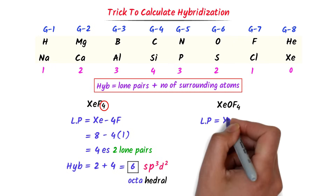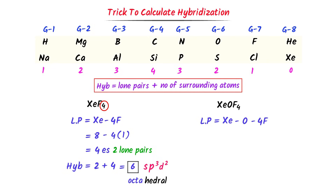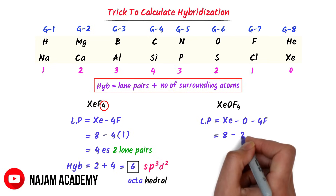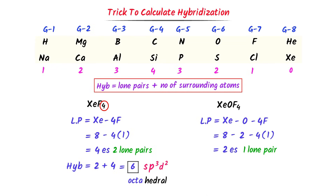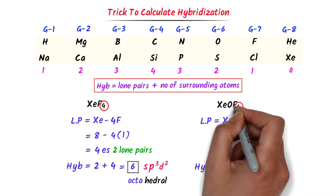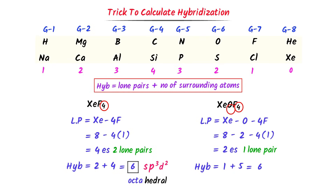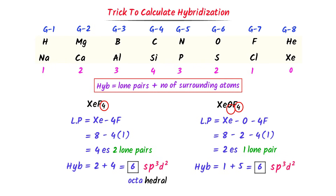In case of XeOF₄, I write xenon minus oxygen minus 4 fluorine: 8 − 2 − (4×1) = 2 electrons, meaning 1 lone pair. Hybridization = 1 + 5 = 6 hybrid orbitals, meaning sp³d². So the hybridization of xenon is sp³d² and its geometry is octahedral. Using this trick, we can easily calculate the hybridization of the central atom.